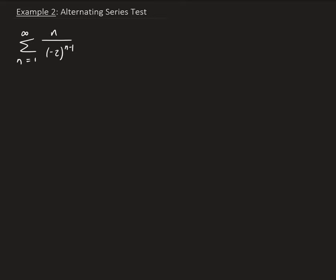We're going to start with n equals 1. When n is 1, we're going to get 1 on top. On the bottom, we end up getting minus 2 to the 0 power, so that's going to give us 1. So this first term is just going to be 1.